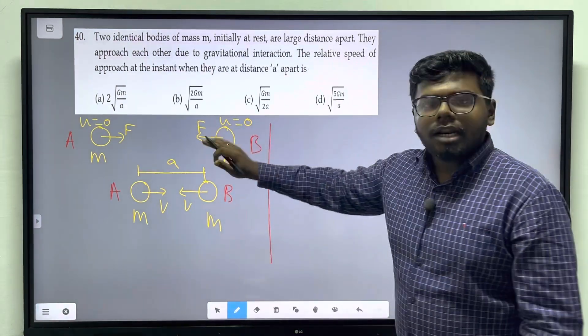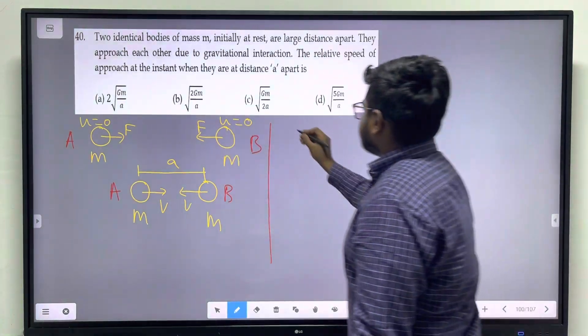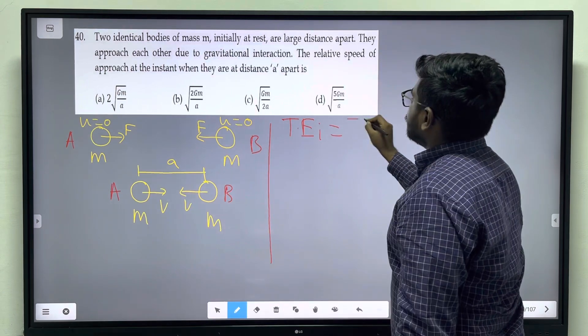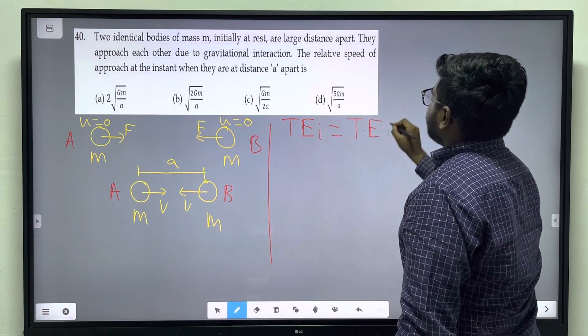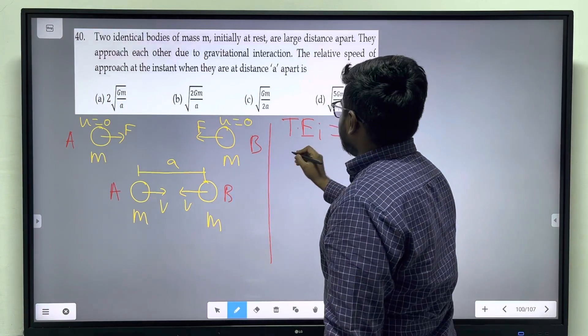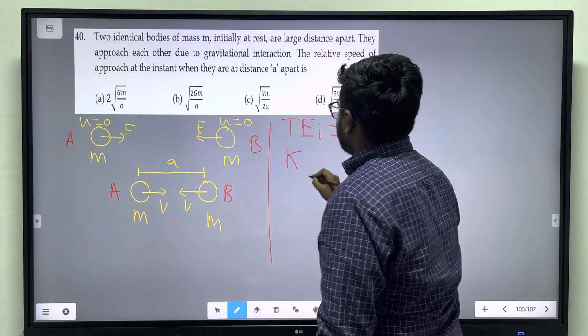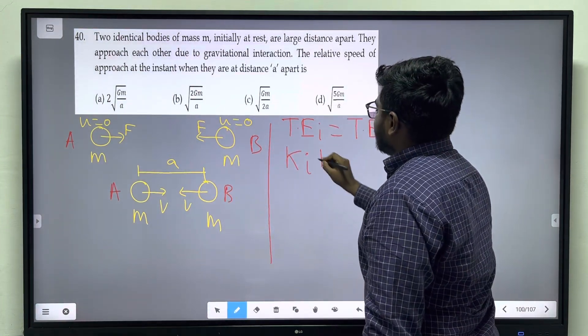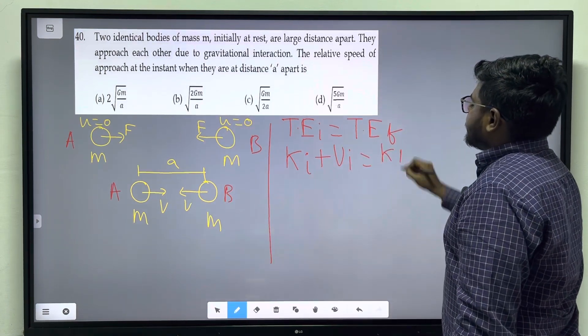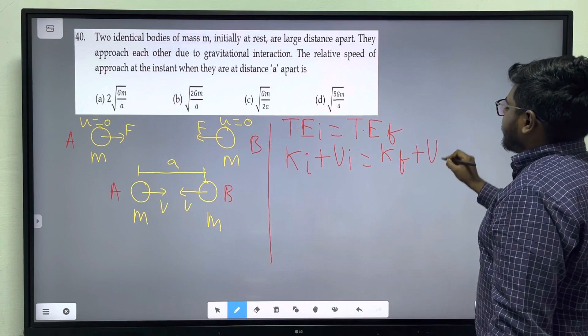By law of conservation of total energy. So total energy initial equal to total energy final. So total energy kinetic energy plus potential energy. So kinetic energy initial plus potential energy initial equal to kinetic energy final plus potential energy final.